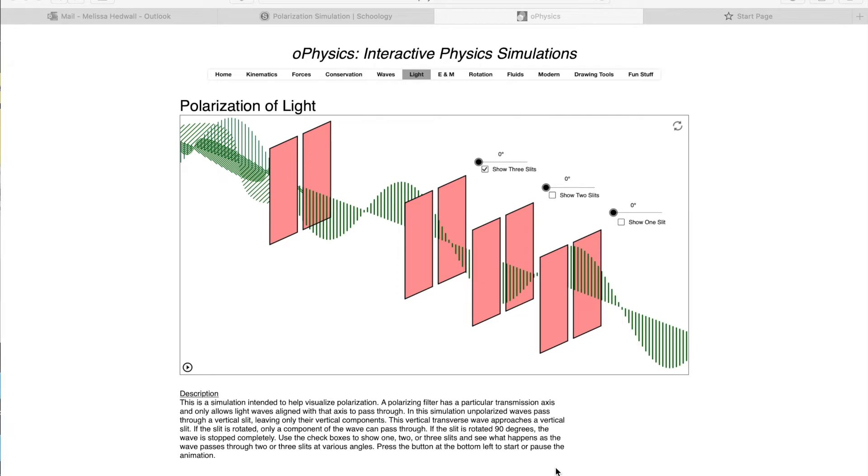When you follow the link to the simulation, you can see that they have three different polarizers that are on there to start. And so you can check however many you want.